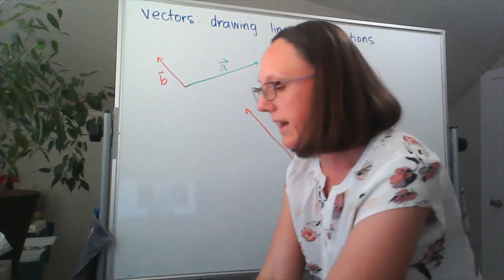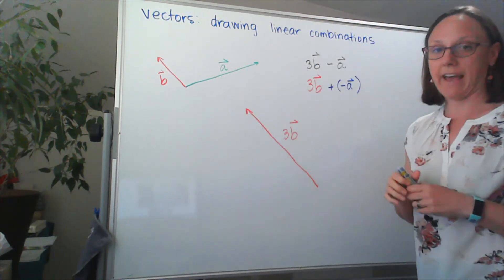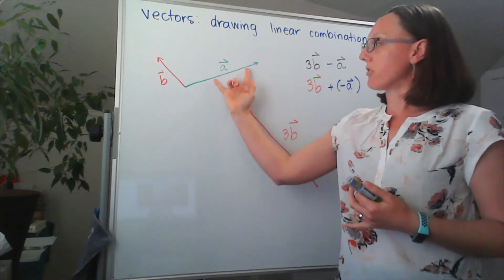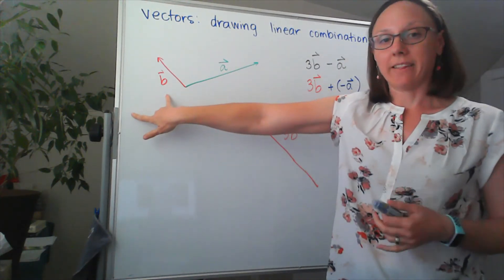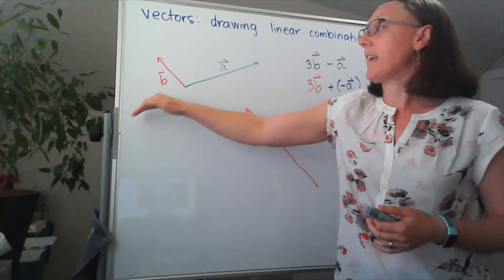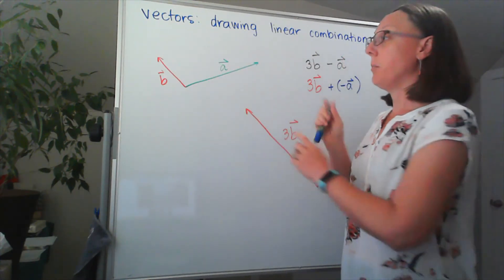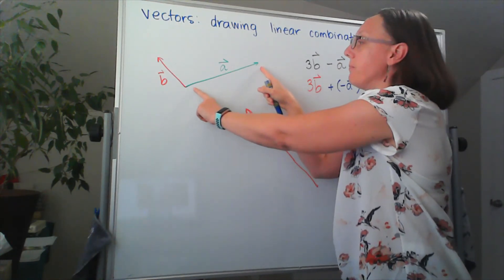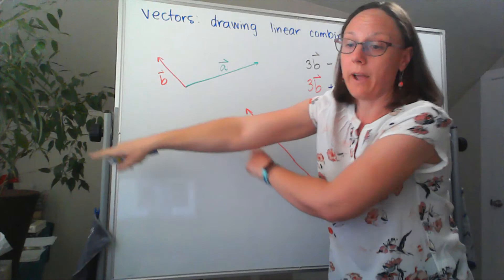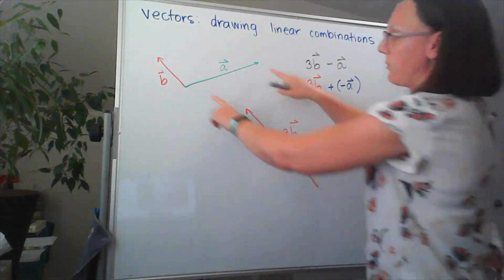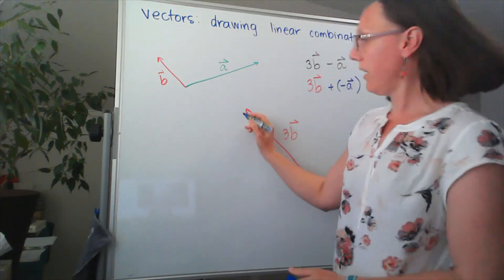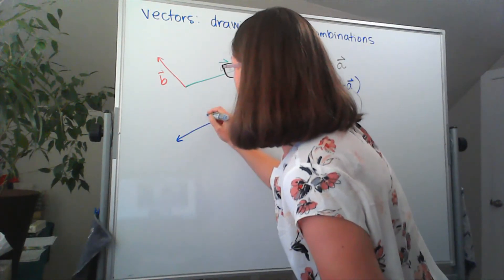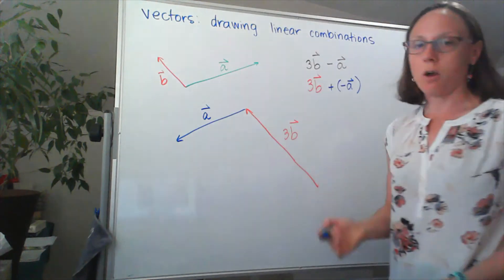And to that, I'm going to add the vector negative A. Now the negative of a vector flips the vector to point in exactly the opposite direction. So it will keep the same angle and keep the same magnitude. But the head of the vector or the arrow will now be pointing the other way. So I'm going to take our vector A, sketch it down here, but in the opposite direction.